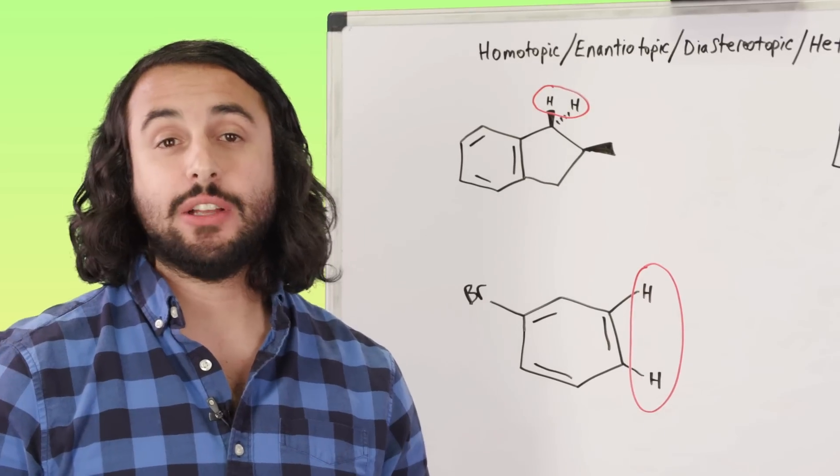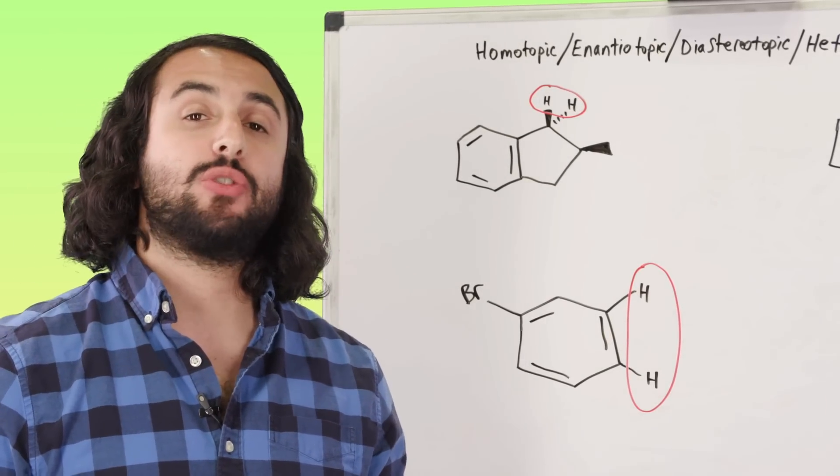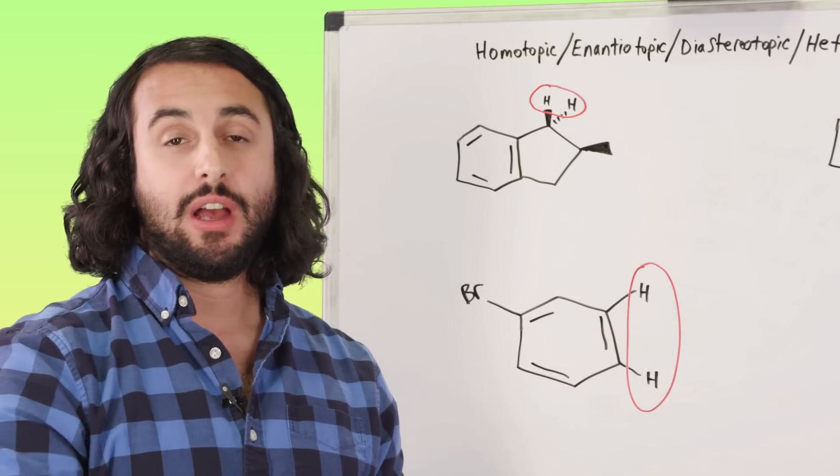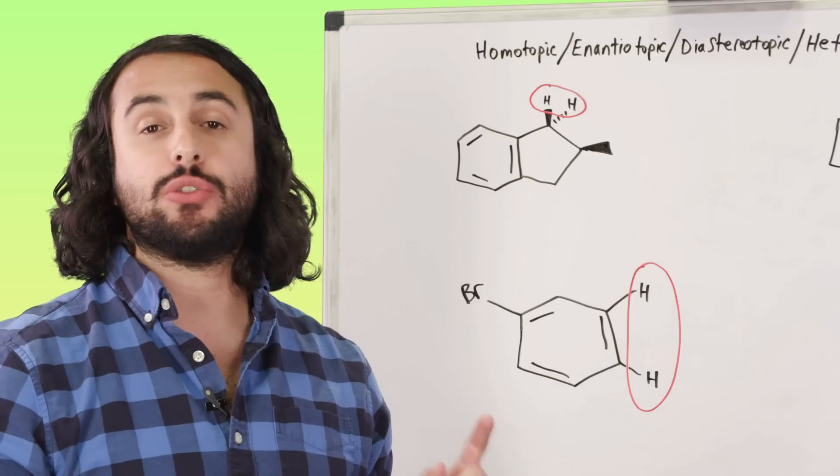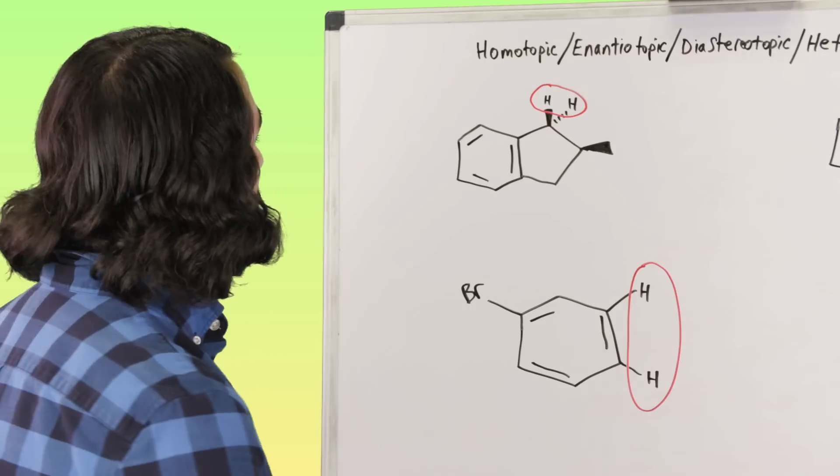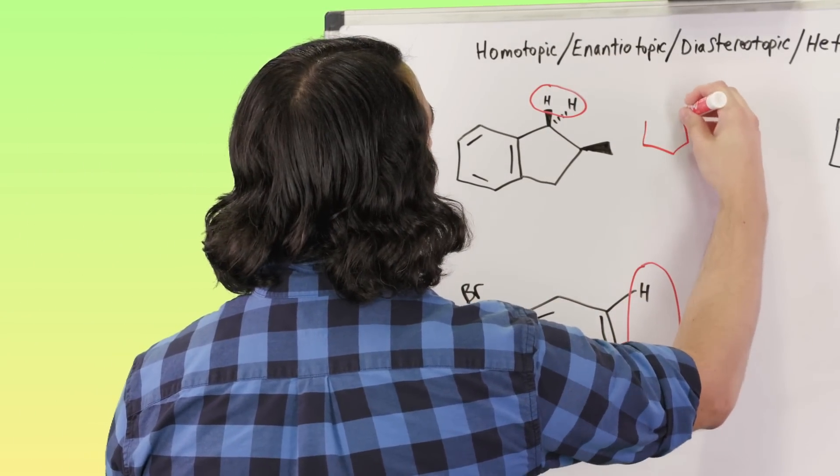So let's take a look at this example first. Now we remember when we're trying to assess the relationship between two protons, what we do is we redraw the molecule in two ways, and in each one of those two we swap one of those hydrogens with some other element. We can take this one and if we imagine drawing this molecule again.